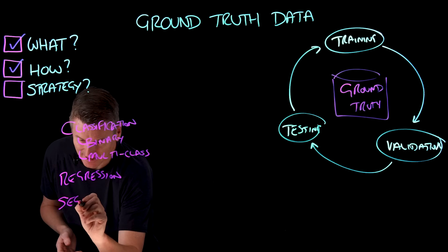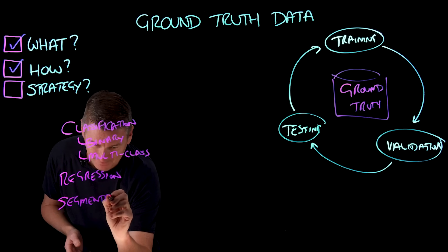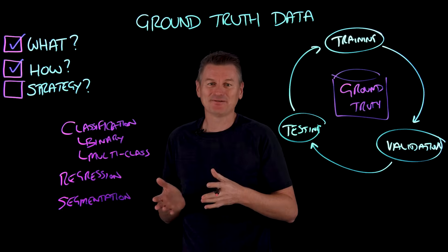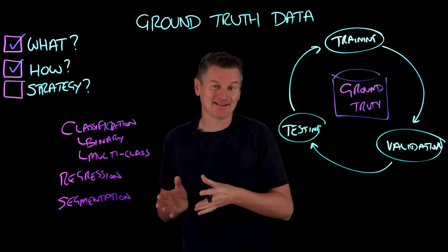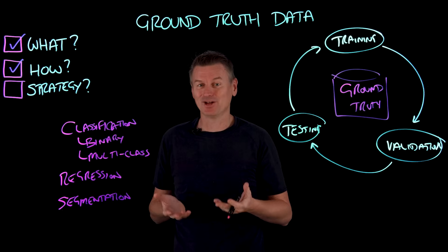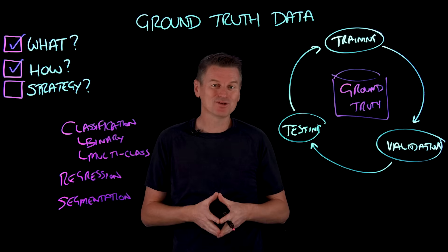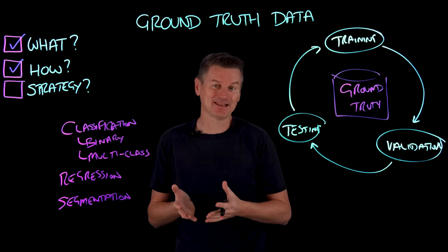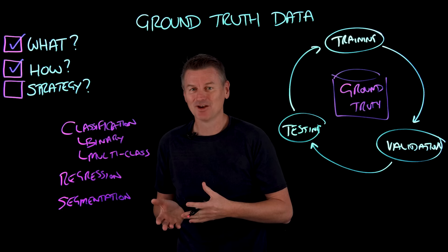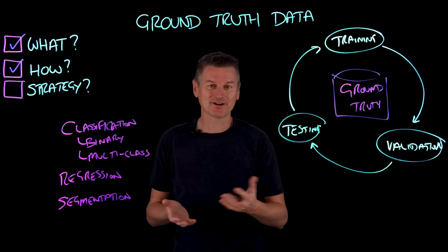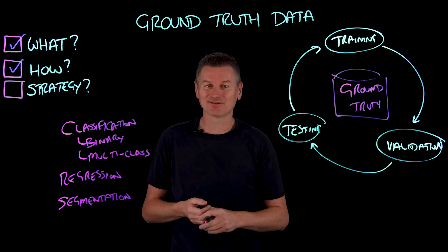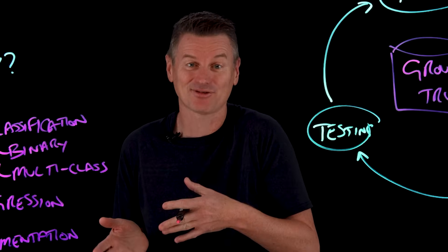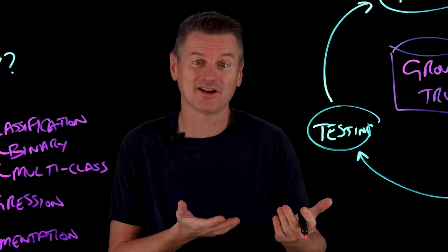And then there is also segmentation. Segmentation tasks involve breaking down a data set or an image into distinct regions or objects. Ground truth data in segmentation is often defined at a pixel level to identify boundaries or regions within an image. For example, in autonomous vehicle development, ground truth labels are used to train models to differentiate between pedestrians, vehicles, and road signs.